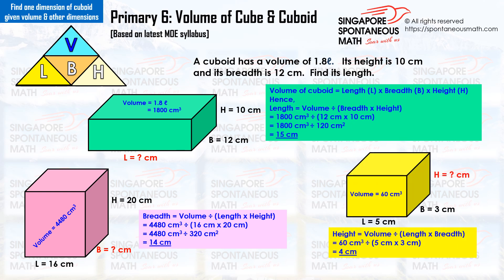We have the length and the breadth — multiply them: 5 cm times 3 cm equals 15 cm². To find the height, we take the volume divided by the figure for length times breadth: 60 divided by 15 equals 4. The height of the cuboid is 4 cm.